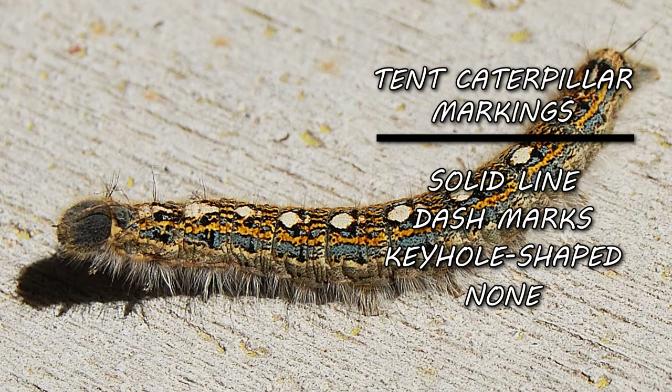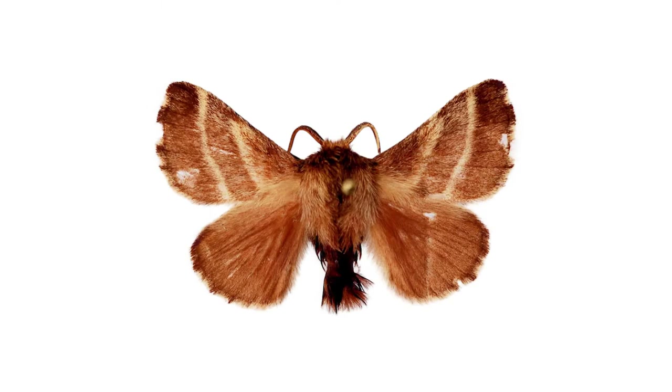When tent caterpillars mature, they'll pupate into adult moths. The moths are brown, with two diagonal lines or a brown band running across each of the wings.